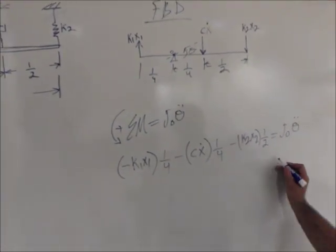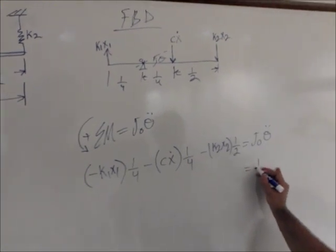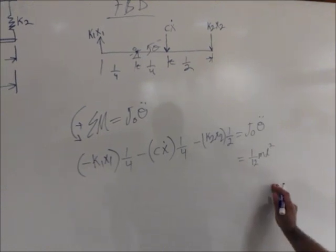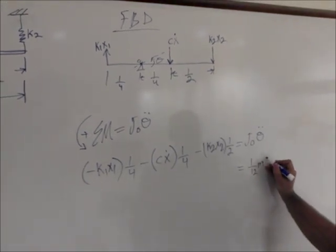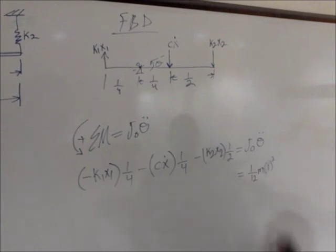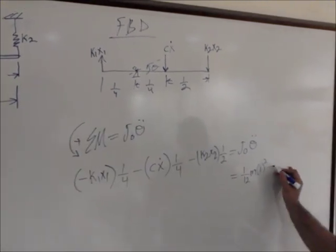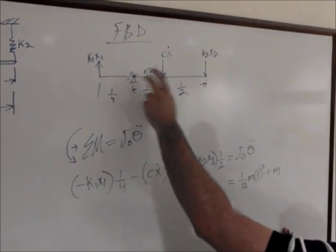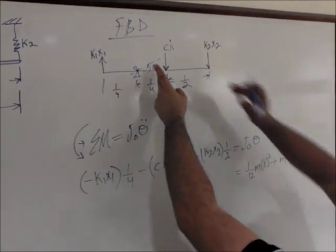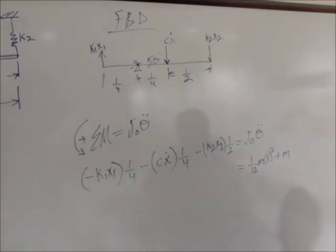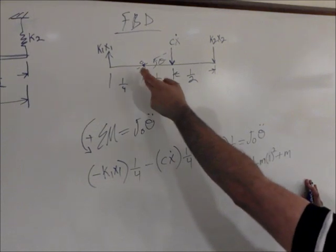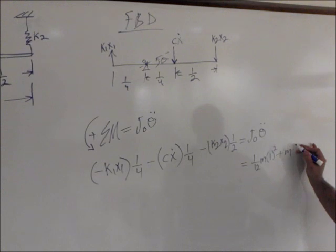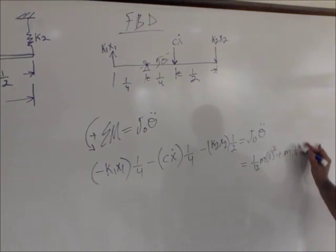Breaking this further, the moment of inertia is one-twelfth times M times L squared — in this case the whole rod length is 1, so it's 1 squared — plus M times the distance from pin O to the center of mass, which happens to be one-fourth, squared.